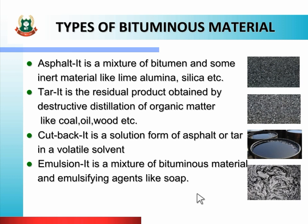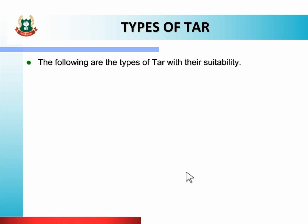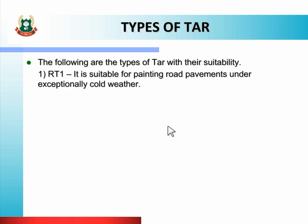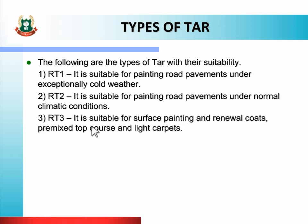Next we will see about different types of tar, that is road tar, called RT. RT1 — road tar 1 — is suitable for painting road pavements under exceptionally cold weather. RT2 is suitable for painting road pavements under normal climatic conditions. RT3 is suitable for surface painting and renewal coats, pre-mix, top course, and light carpets. Surface painting ke liye aur top course mein pre-mix karke yeh road tar use karate hain.